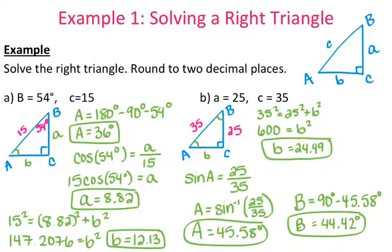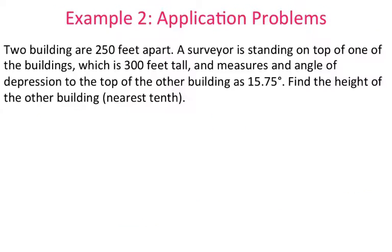Solving a right triangle means solving for any of the missing sides or missing angles. The next thing we're looking at are application problems. There are two buildings that are 250 feet apart. A surveyor is standing on top of one of the buildings, which is 300 feet tall, and measures the angle of depression to the top of the other building as 15.75 degrees. Find the height of the other building to the nearest tenth.